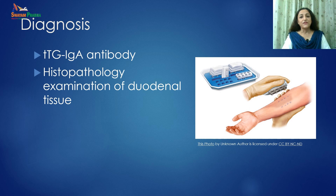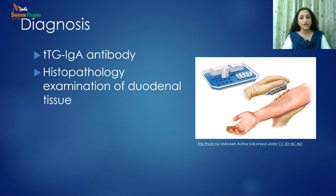Whenever celiac disease is suspected, the most commonly recommended screening blood test is antibody testing — the TTG-IgA antibody test. The gold standard for diagnosis of celiac disease is histopathological examination of duodenal tissue taken endoscopically.